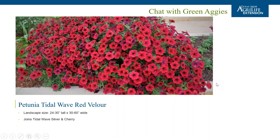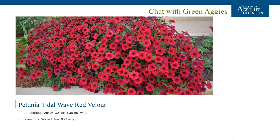Tidal Wave Red Velour petunia has recently been named a Texas Superstar. The Wave series is now 25 years old. Tidal waves will get large — about 24–30 inches tall and 30–60 inches wide — so for landscapers needing to cover a large area with few plants, this is something to consider. It joins Tidal Wave Silver and Cherry, which are already Texas Superstars, providing a nice color mix among the three. On the production side, plug time is about 5–6 weeks after sowing, and transplant to finish is 6–8 weeks.